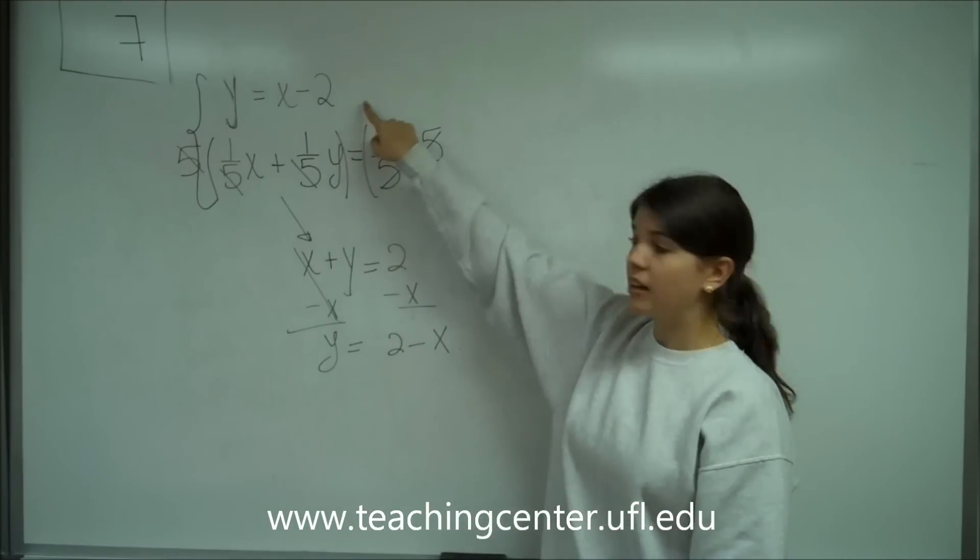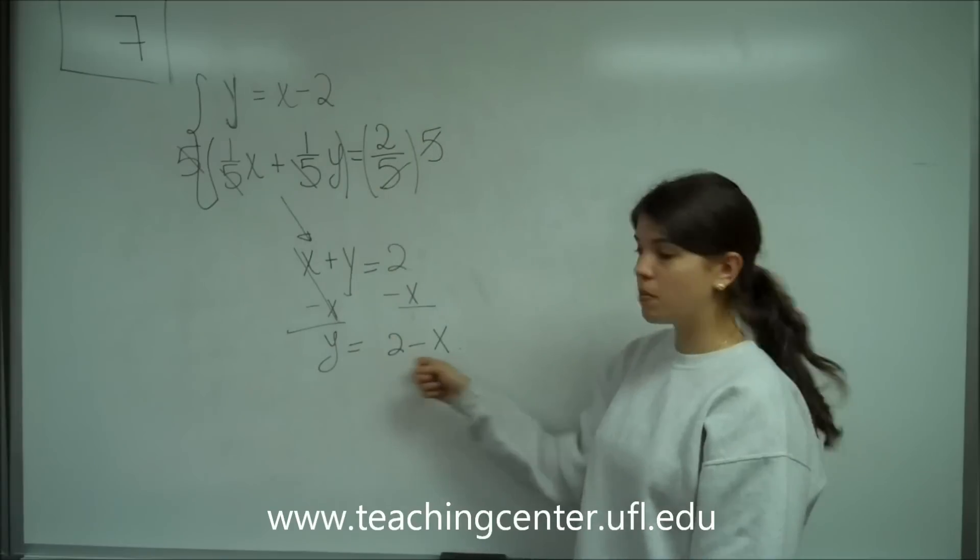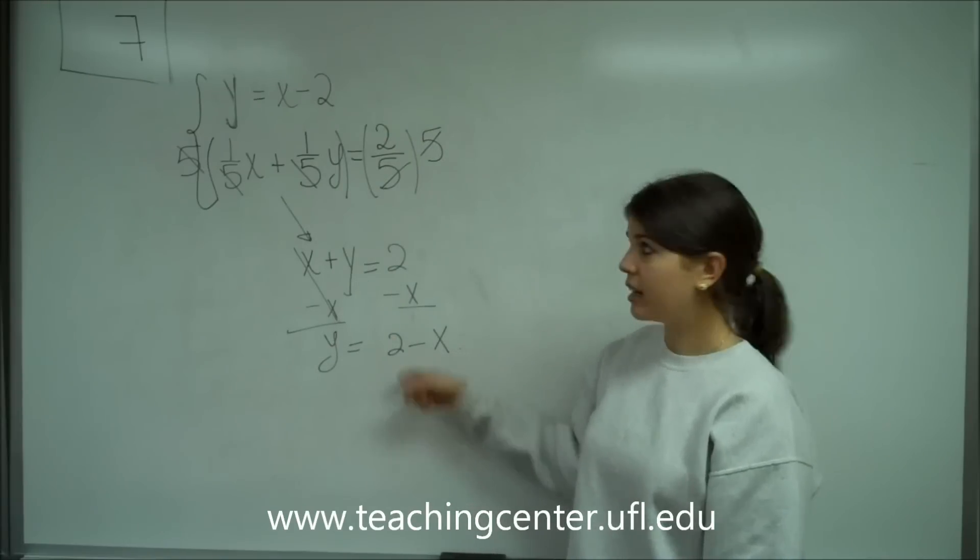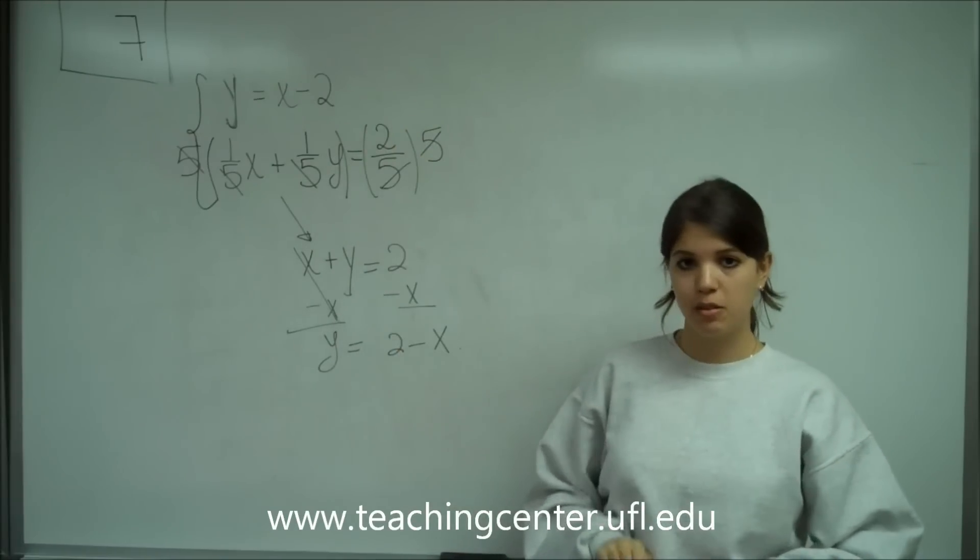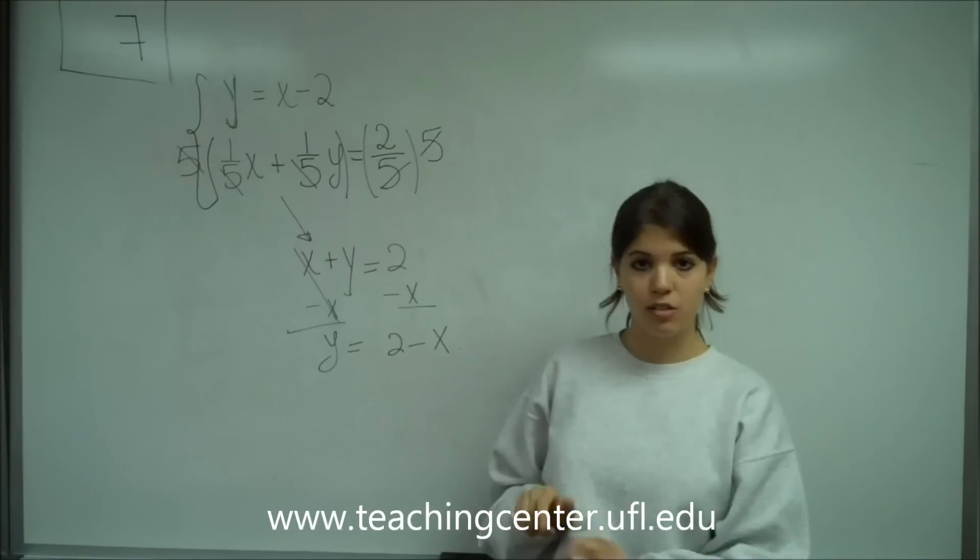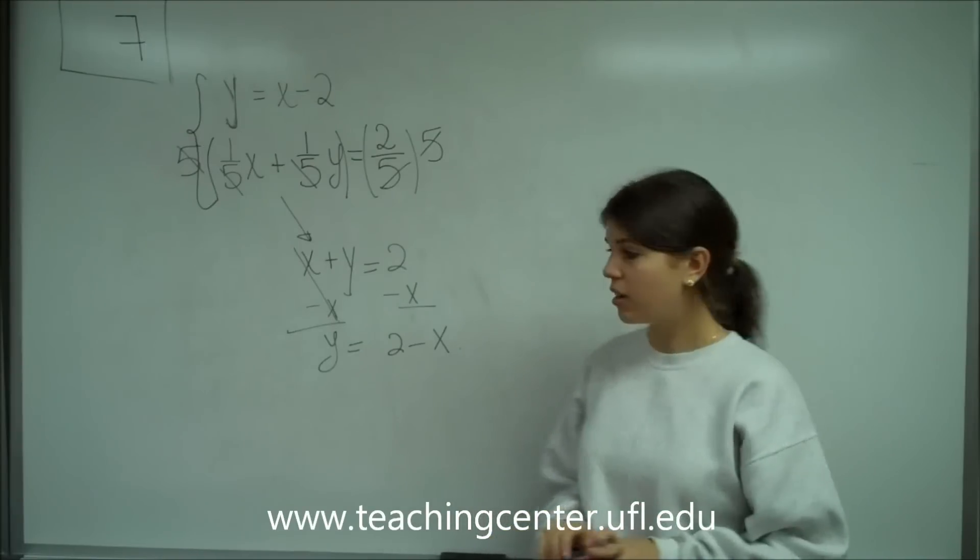So now when I compare this to that, this is x minus 2 and this is 2 minus x, which is the negative of it. So it's really not the same solution. So that answer is out of the question. It's not infinitely many solutions.